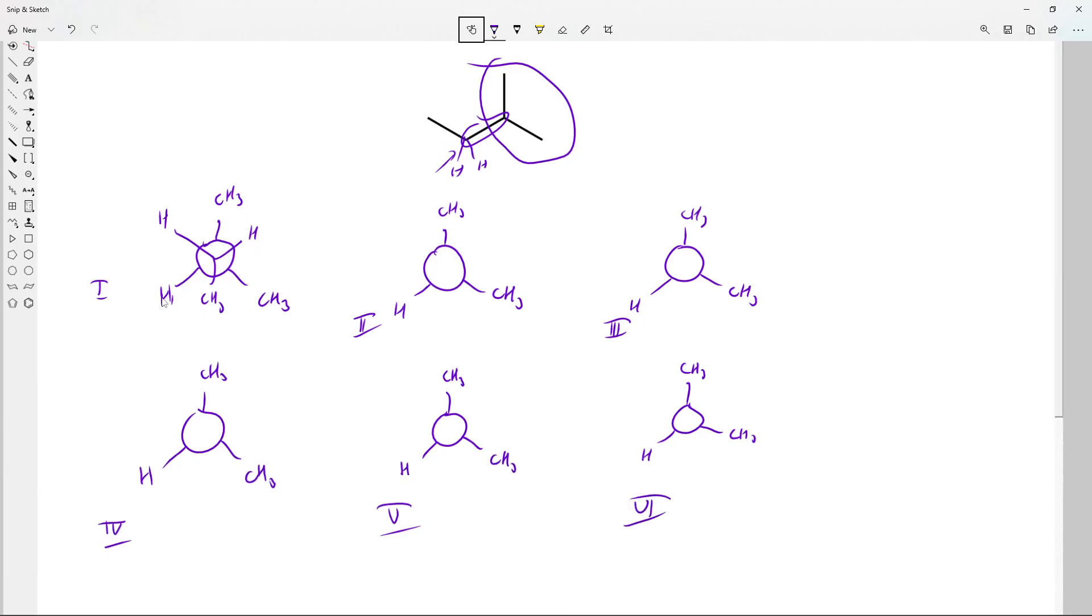In each case, I'm going to turn that front atom by 60 degrees. So I'm going to go from staggered to eclipsed to staggered to eclipsed all the way across. I'm going to do it clockwise just for consistency. So the first one is going to put that methyl group eclipsing the hydrogen.